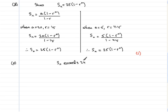Welcome back. Sn exceeds 24 can be written as Sn is greater than 24. Therefore, if Sn is 25 times 1 minus r to the n, choosing the largest value of r which was 4 fifths, we have 25 multiplied by 1 minus 4 fifths to the power n greater than 24. I'm going to divide both sides by 25.